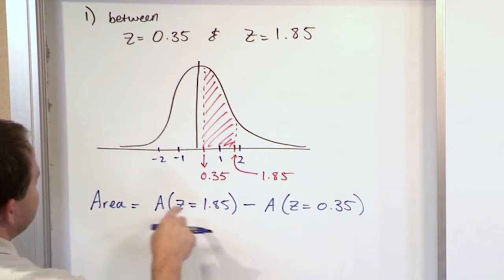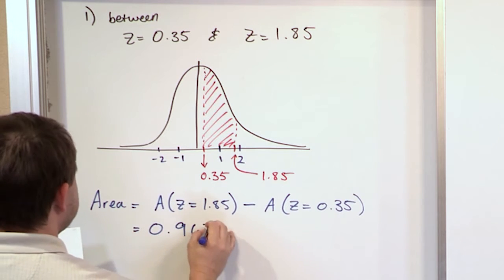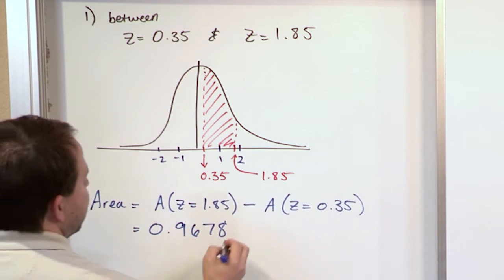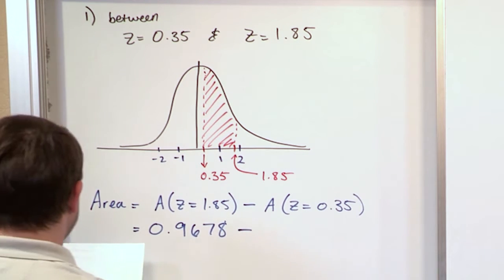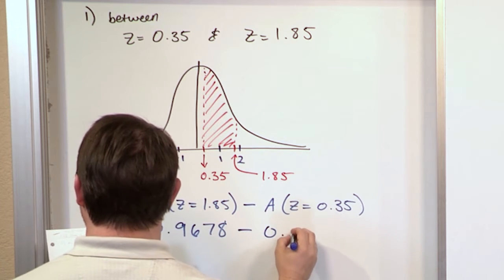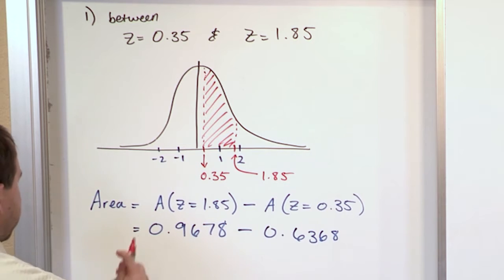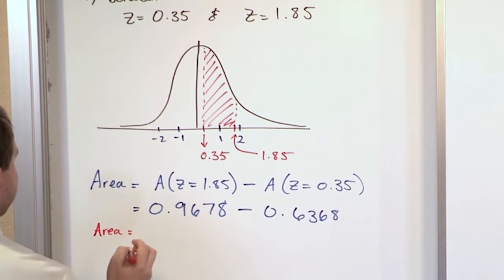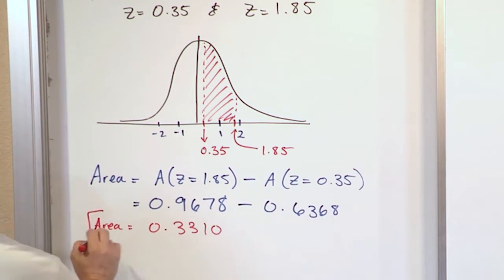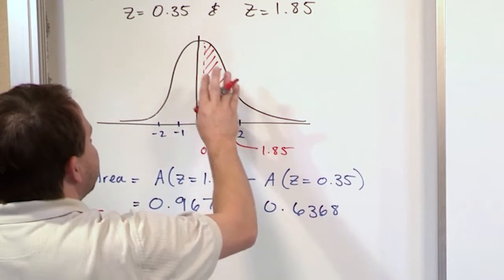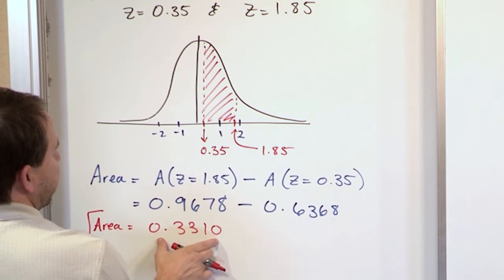When you look at the table at z = 1.85, the answer you get is 0.9678. You then subtract from that the area you get from looking at z = 0.35, which is 0.6368. So the area between those two points, when you do the subtraction, is 0.3310. That is the answer.